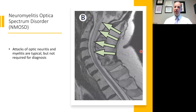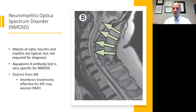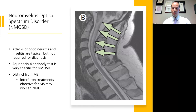Patients with NMO spectrum disorder typically have attacks of optic neuritis and myelitis, but they do not have to have those for the diagnosis. Recent research has shown there is an antibody that is very, very specific for NMO spectrum disorder — the aquaporin-4 antibody test — which is extremely useful in clinical practice. It also helps us realize that neuromyelitis optica spectrum disorder is a distinct entity from multiple sclerosis. They are definitely not the same disease, and that has great implications for treatment. In fact, there are even some treatments such as interferon beta that while effective for multiple sclerosis may actually worsen neuromyelitis optica.